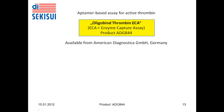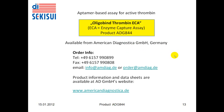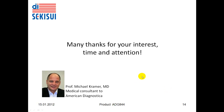The aptamer-based assay for active thrombin, Oligobind Thrombin ECA, product number ADG844, is available from American Diagnostica GmbH in Germany. Order information is available via telephone, fax, or email, and additional product information and data sheets are available at the American Diagnostica GmbH website at americandiagnostica.de. My name is Michael Kramer, and I am a medical consultant to American Diagnostica. Thank you very much for your interest, time, and attention.